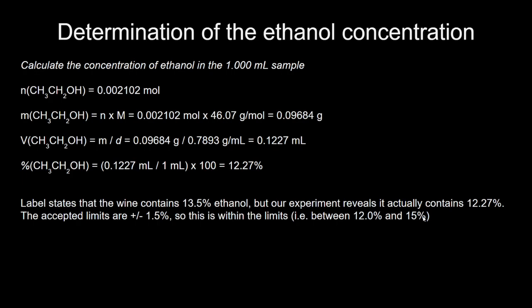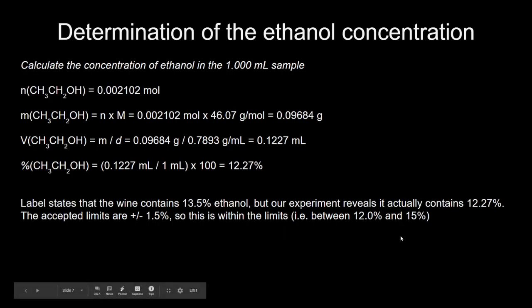Hopefully that made sense. It was quite complex with all the information given at the beginning, but basically we just created a standard solution of iron to standardize our oxidizer, and we compared the initial concentration of the oxidizer with its concentration after it's done its job of oxidizing the ethanol. That enabled us to figure out how much ethanol was consumed, and that's how we answered the question about the concentration of ethanol in the wine sample. Thanks very much.